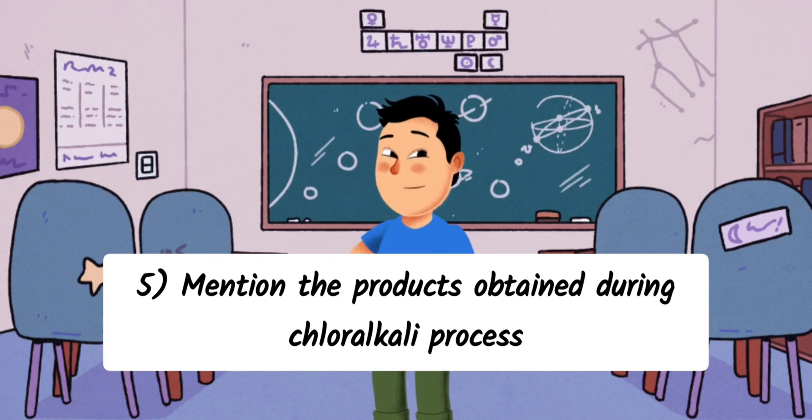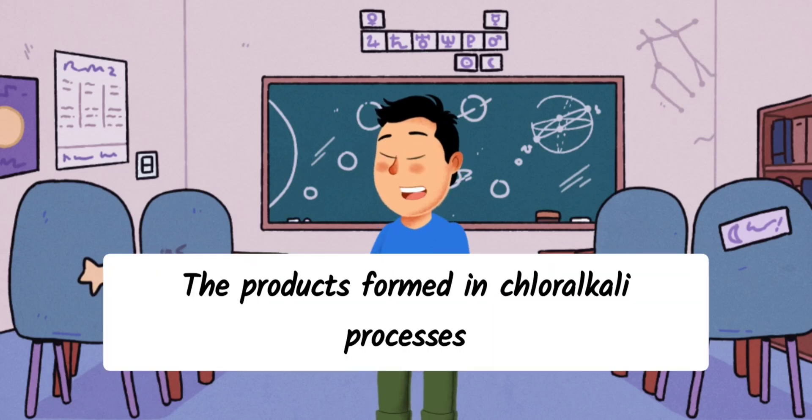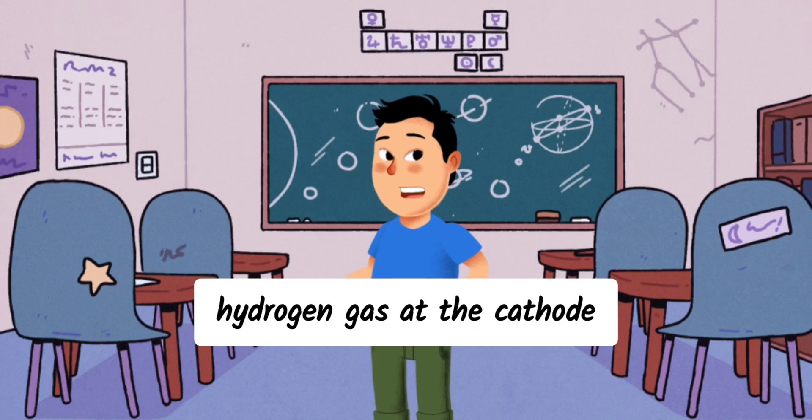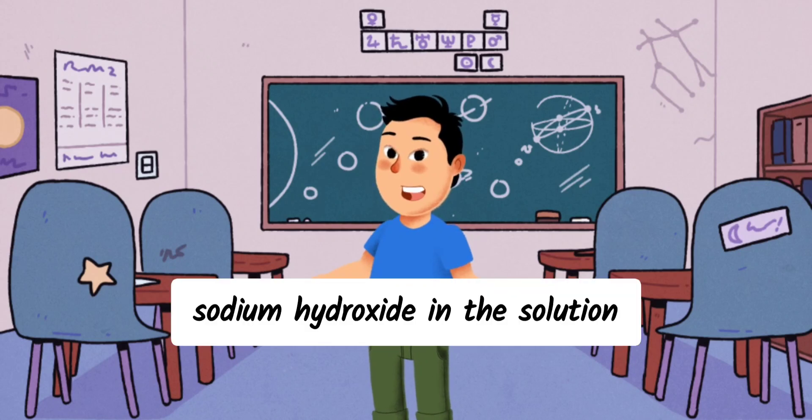Question 5: Mention the products obtained during chloralkali process. Answer: The products formed in chloralkali process are chlorine gas at the anode, hydrogen gas at the cathode, and sodium hydroxide in the solution.